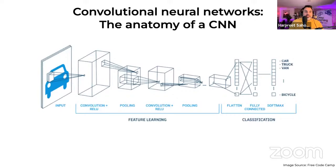Let's talk about the architectural anatomy of convolutional neural networks. There are convolutional layers, activation layers, pooling layers, and dense layers. All of these building blocks are combined in various ways to create a network. Let's dig into these one at a time, starting with the convolutional layer.